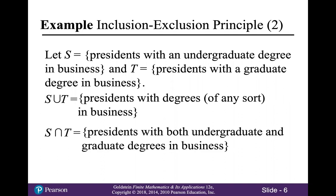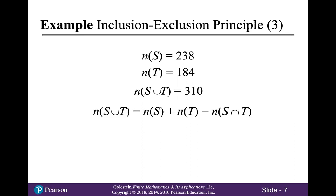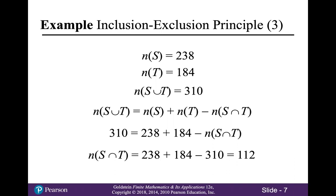And the intersection of S and T is the set of all presidents with both undergraduate and graduate degrees in business. Since N(S) is 238, N(T) is 184, and N(S union T) is 310, we can use the inclusion-exclusion formula to solve for N(S intersect T) by substituting these three values into the formula, and solving for N(S intersect T), which comes out to be 112.